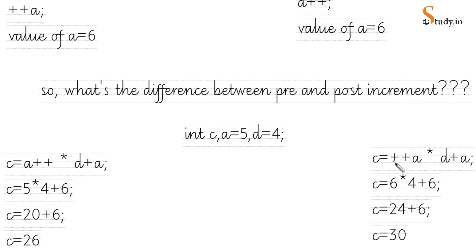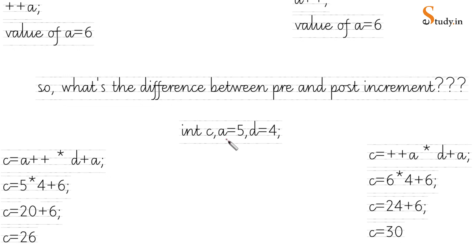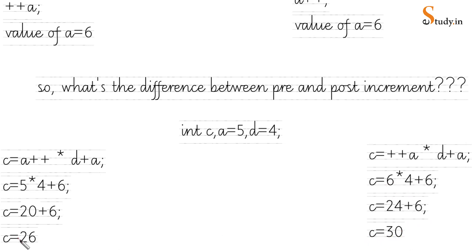Now for the pre-increment expression: because it is pre-increment, we first change the value and then use the new value. So a = 5 becomes 6 first. The expression becomes: 6 * d + a = 6 * 4 + 6. Moving left to right: 6 * 4 = 24, plus 6, gives the answer 30.